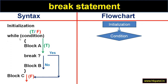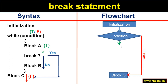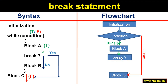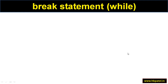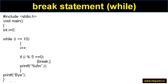Looking at the flowchart for break: initialization first, then condition. If false, go to block C. If true, execute block A, then check whether break is to be executed. If yes, come out of the loop. If no, execute block B and go back to the condition. As mentioned, break is typically used with a condition — if break is executed, yes; otherwise no.